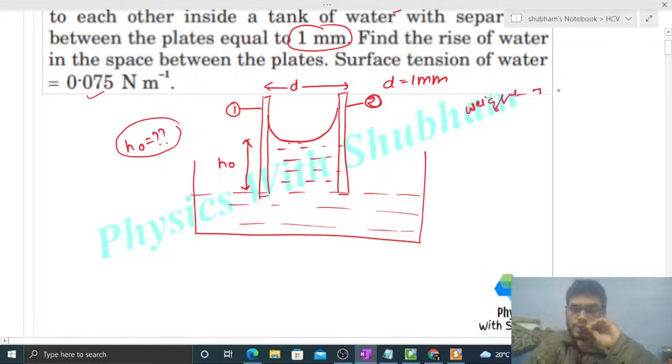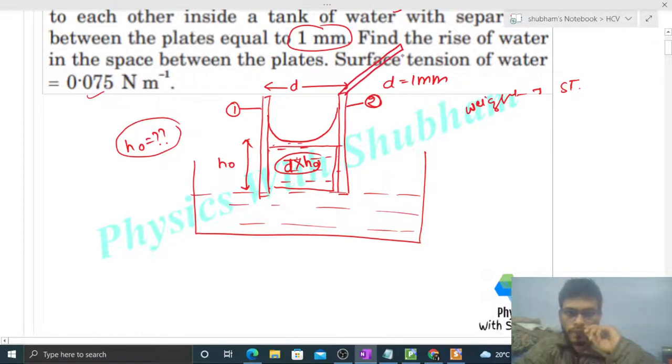How much water rose? See, this cross-sectional area is d into h naught, right? And let's say the width of this plate, in this direction, the width of the plates will be something like this. Its width will be b, same width. So let's say this width is b.